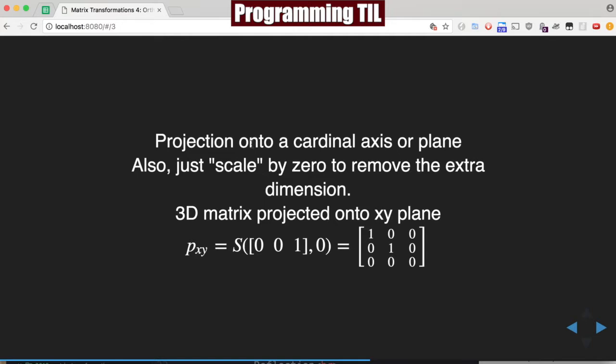A quick example of how this is computed: projection into the cardinal axis or plane is basically scaling by 0 to remove the extra dimension. So 3D matrix projected into the X, Y plane, you'll have 0, 0, 1 here, and then scaling by 0. This will be using the scaling matrix that we computed in the previous episode, so you can always see what it is, and this is the end result right here.